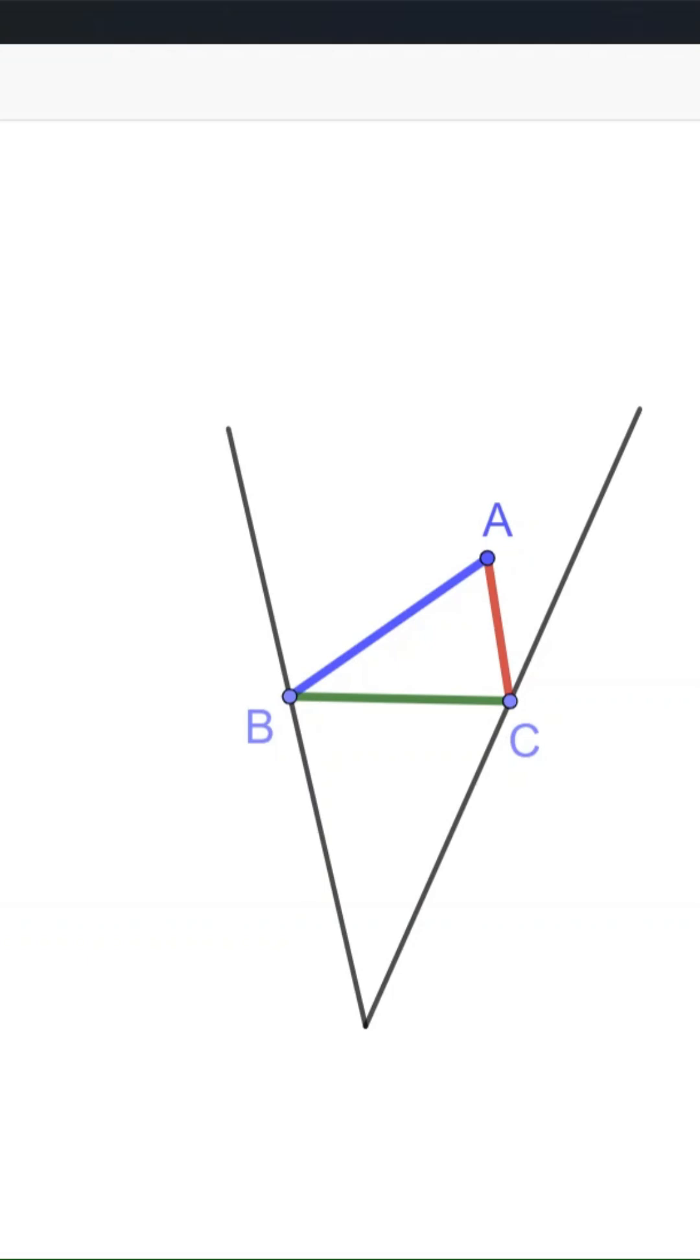Given a fixed point A in an angle, how to find two points B and C on the two sides of the angle so that the triangle ABC has the minimal perimeter?